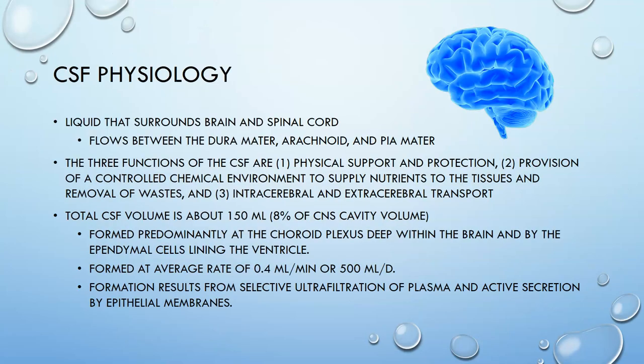Let's quickly review some spinal fluid physiology. Spinal fluid is the fluid that surrounds the brain and spinal cord. It flows between the dura mater, arachnoid, and pia mater. The three functions of CSF are: physical support and protection of the brain and spinal cord; provision of a controlled chemical environment to supply nutrients and remove waste; and an intracerebral and extracerebral transport system. The total CSF volume is about 150 mL, which is 8% of the CNS cavity volume. It is formed predominantly at the choroid plexus and by the ependymal cell lining the ventricle, at an average rate of 0.4 mL per minute or 500 mL per day, resulting from selective ultrafiltration of plasma and active secretion by the epithelial membranes.